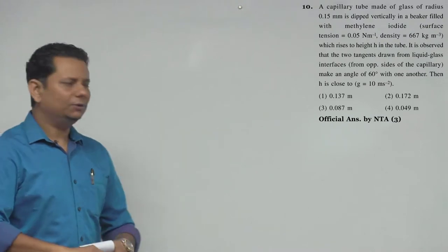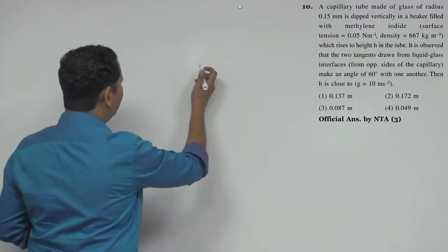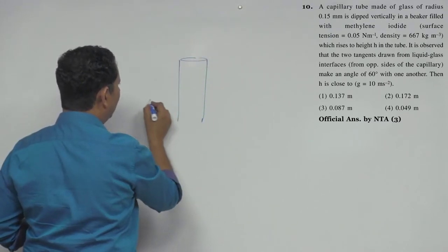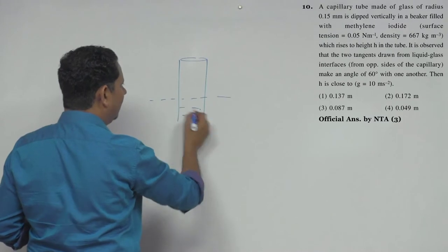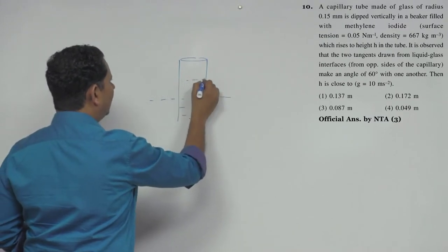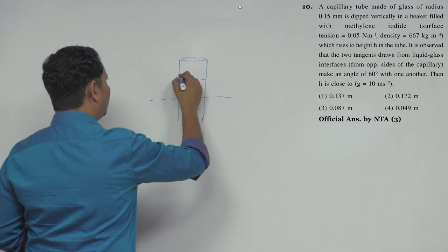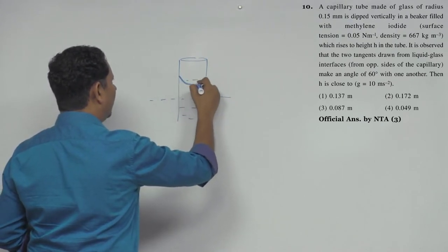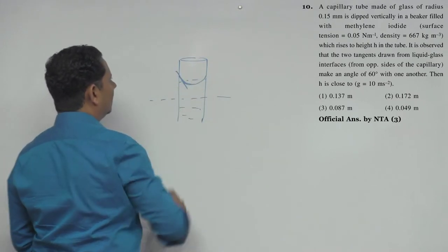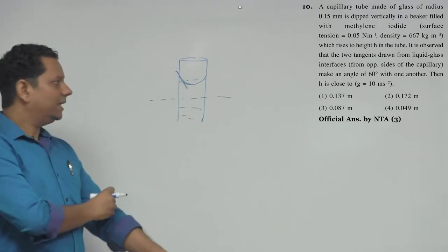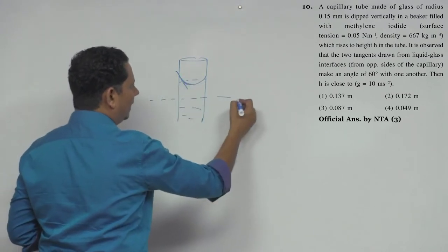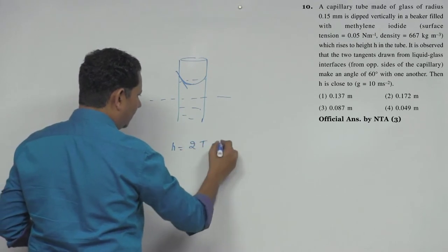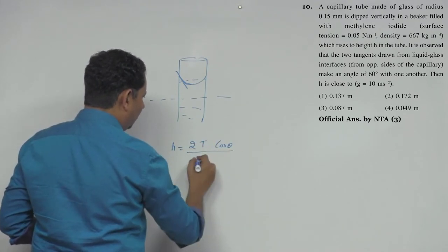This is a simple question — you can directly use the formula. When we talk about capillary rise, the capillary is dipped in the liquid solution, and the liquid rises to height H. The solution curves on both sides, and we need to find the contact angle theta. You can directly apply the formula: H = 2T cosθ / (ρ g r).